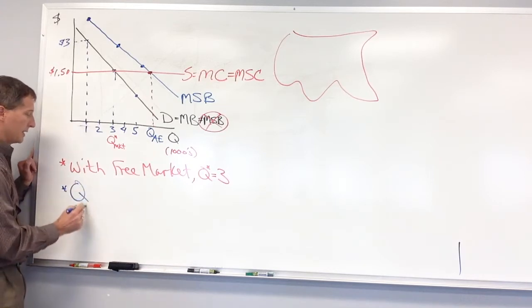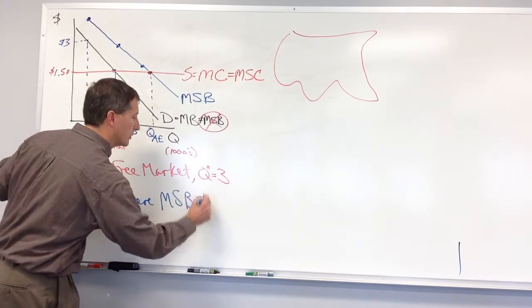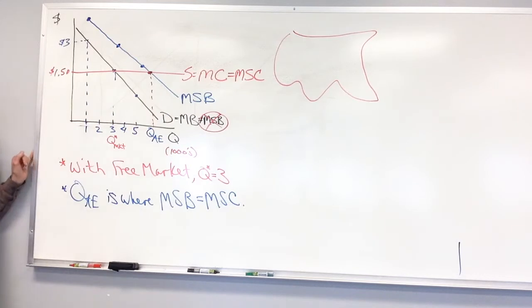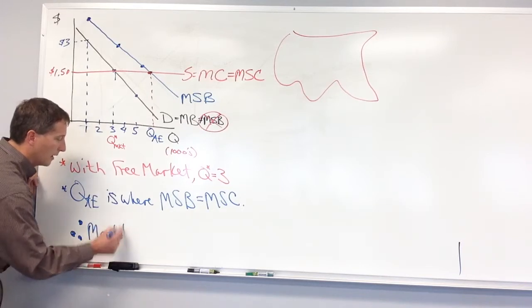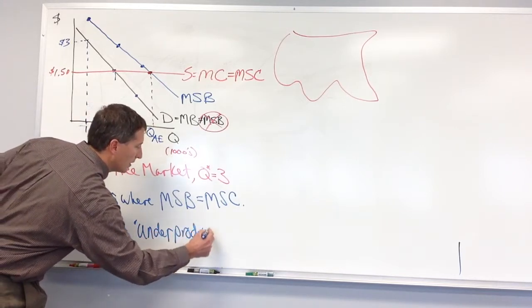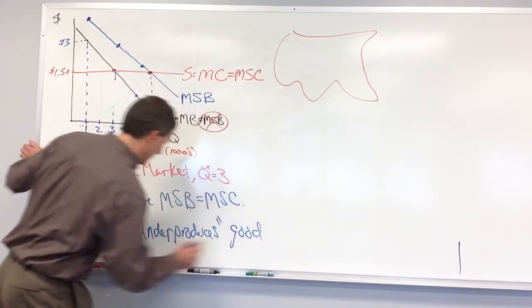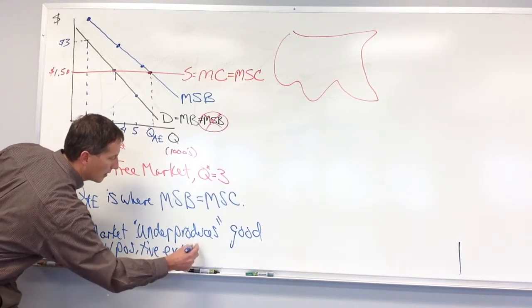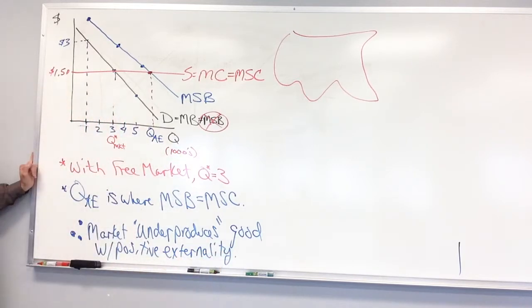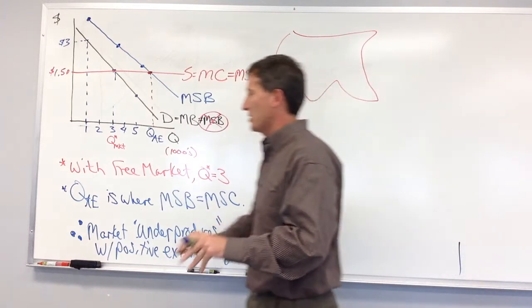So the marginal social benefit intersects the marginal social cost here at QAE. That's the allocatively efficient solution for society. As we saw before, the allocatively efficient solution is where marginal social benefit equals marginal social cost. Therefore, the market under-produces the good with a positive externality.